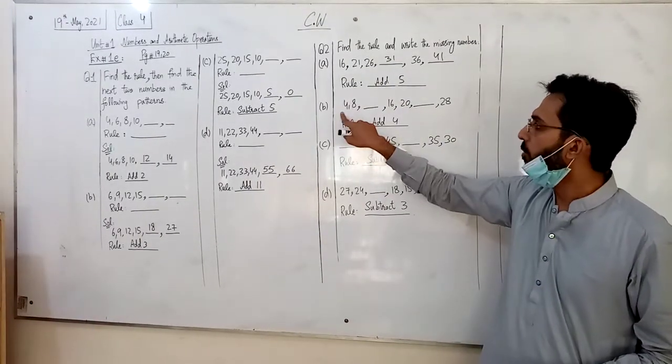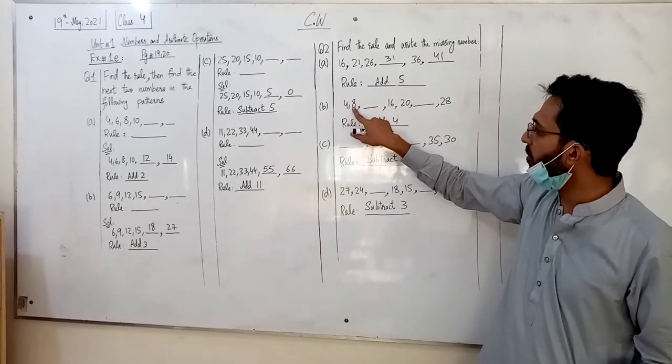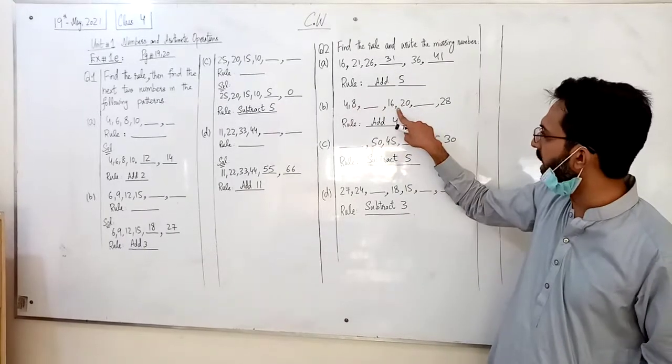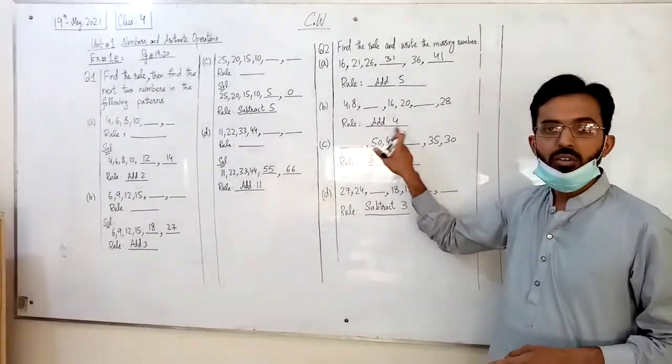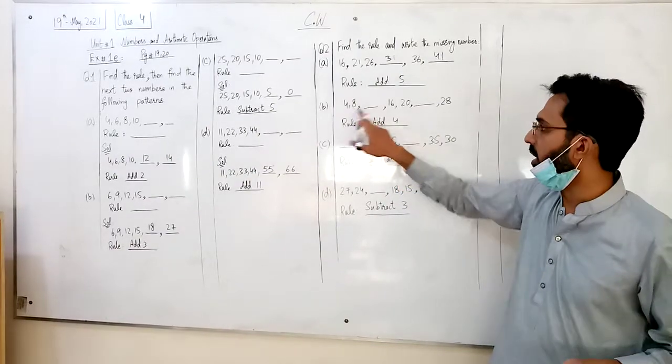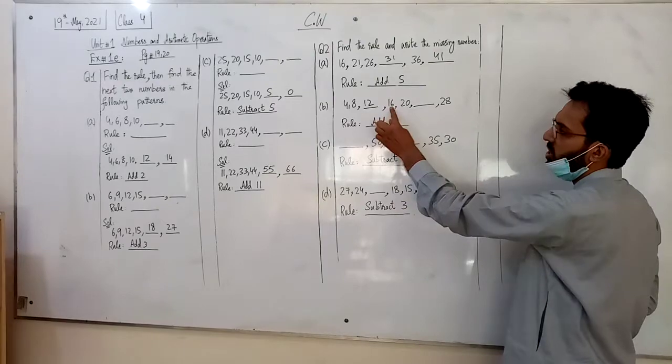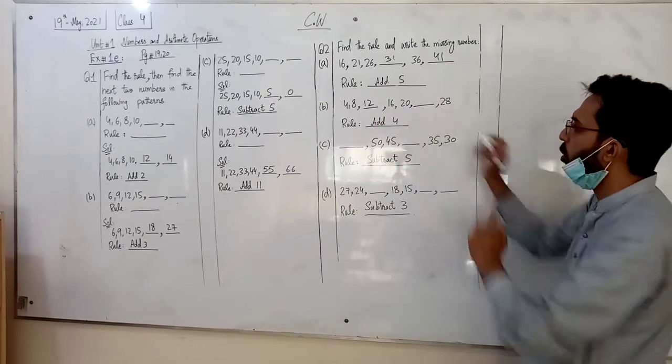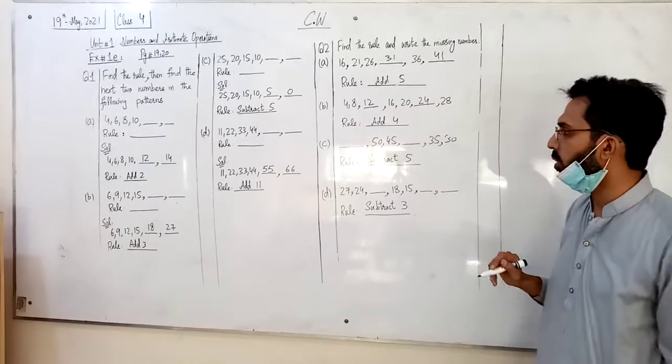Next, B part: 4, 8, dash, 16, 20, dash, 28. 4 plus 4. So rule what is? 4 add. 4 plus 4 is 8, 8 plus 4 is 12, 12 plus 4 is 16, 16 plus 4 is 20, 20 plus 4 is 24, 24 plus 4 is 28. All automatically.